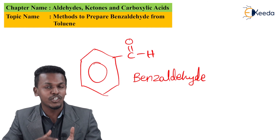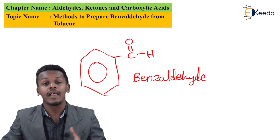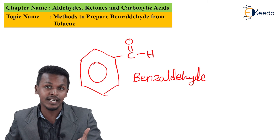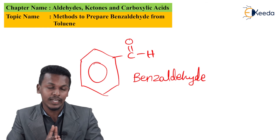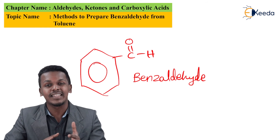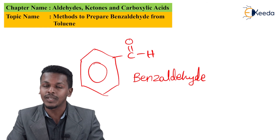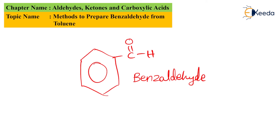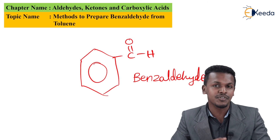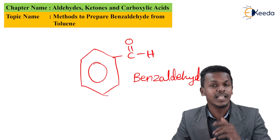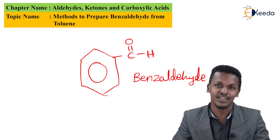So this is how we convert toluene into benzaldehyde: first we chlorinate it using Cl2 in presence of sunlight, obtaining benzal chloride; then the benzal chloride is reacted with water at a certain temperature to give benzaldehyde, the aromatic aldehyde. Thank you friends for watching. I hope you understood clearly — don't forget to subscribe to the channel.